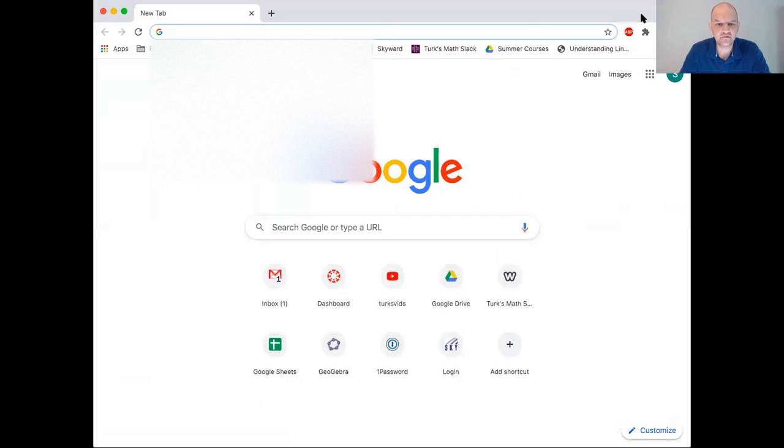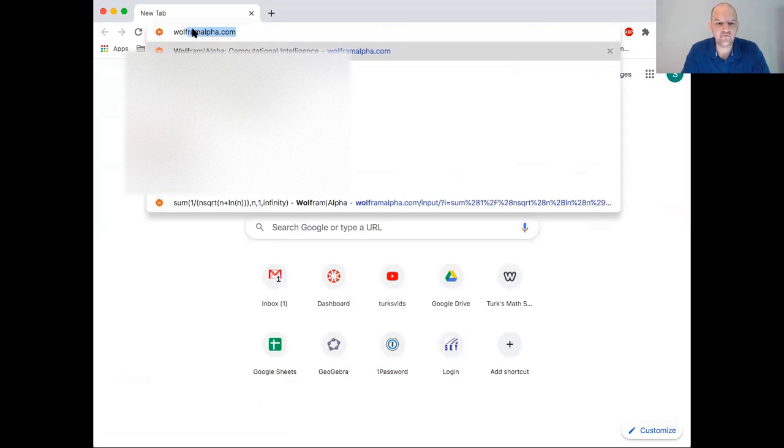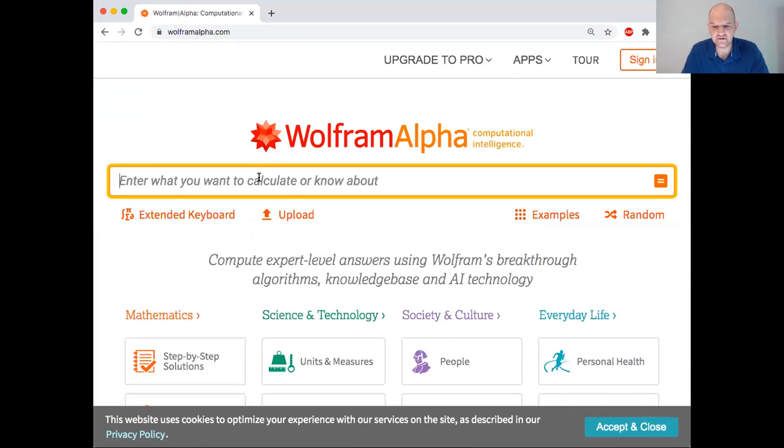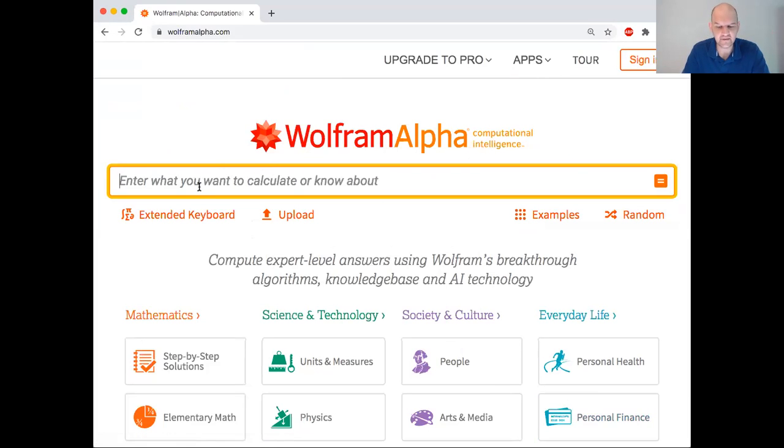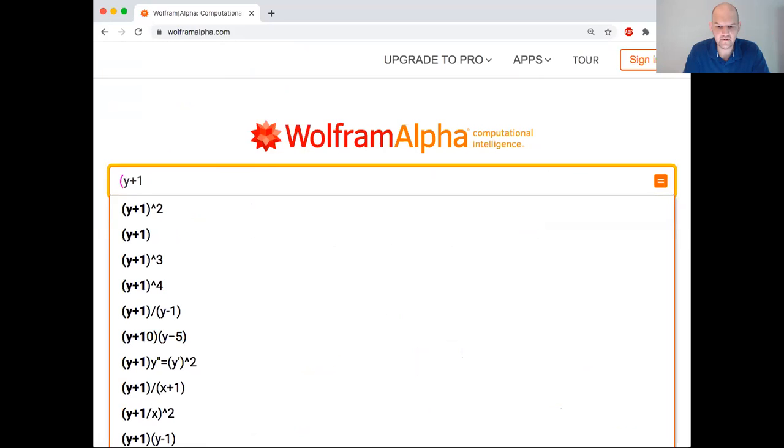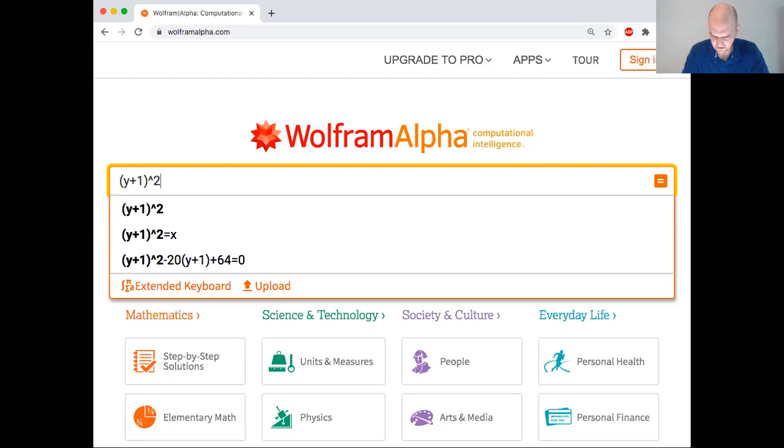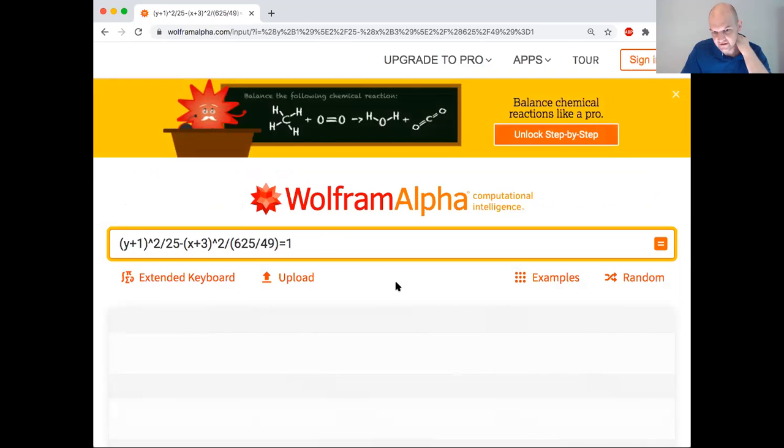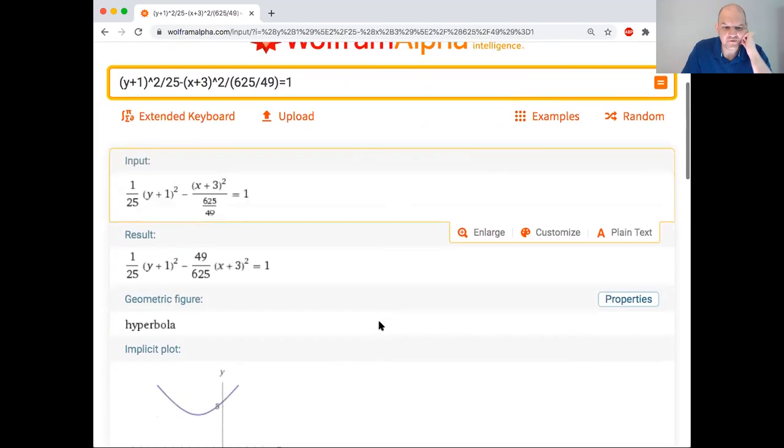And you go to Wolfram Alpha. So if you go to Wolfram Alpha, accept and close type in a conic. So I'm going to type in (Y+1)²/25 - (X+3)²/(625/49) equals 1. Okay. And I'm going to hit enter and let's see what it does.